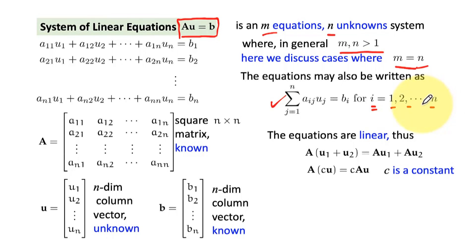If I expand this equation for each i, I will get for i equal to 1: a_11 u_1 + a_12 u_2 all the way up to a_1n u_n = b_1. Similarly, for i equal to 2: a_21 u_1 + a_22 u_2 all the way up to a_2n u_n = b_2. Finally, the nth equation will be given by a_n1 u_1 + a_n2 u_2 all the way up to a_nn u_n = b_n.